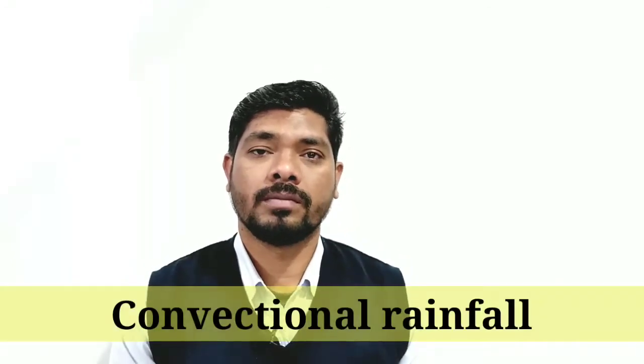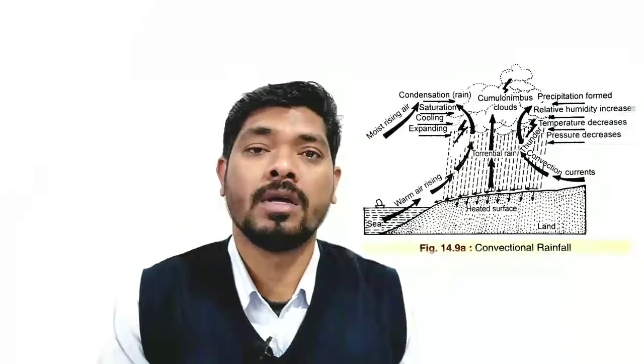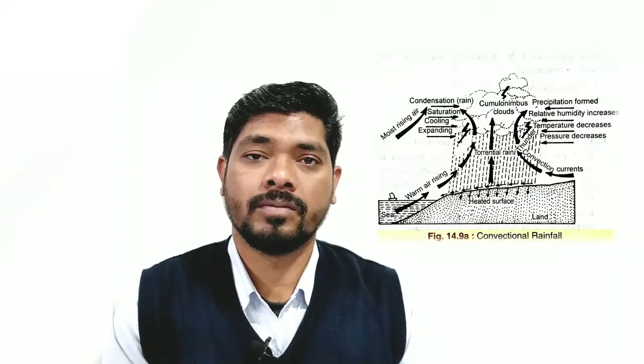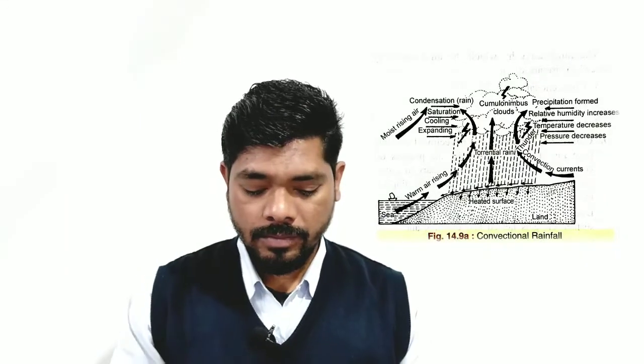Let us first discuss convectional rainfall. Convectional rainfall occurs in the process of convection — as already discussed in insolation, convection means the warm air that rises up in convectional currents. For convectional rainfall to occur, the surface of the earth should be heated with intense heat, as well as there should be an abundance of moisture or nearby water bodies.